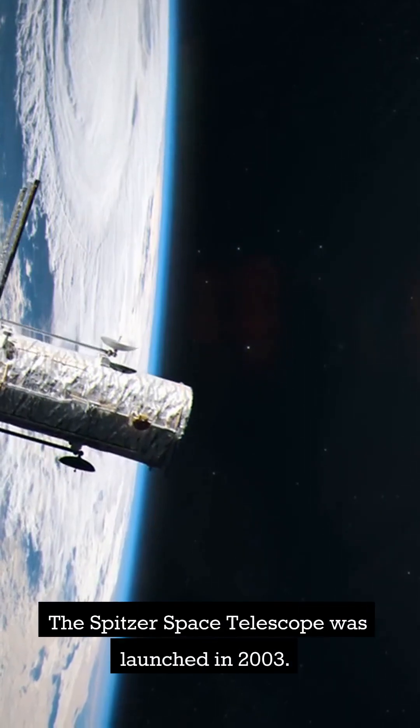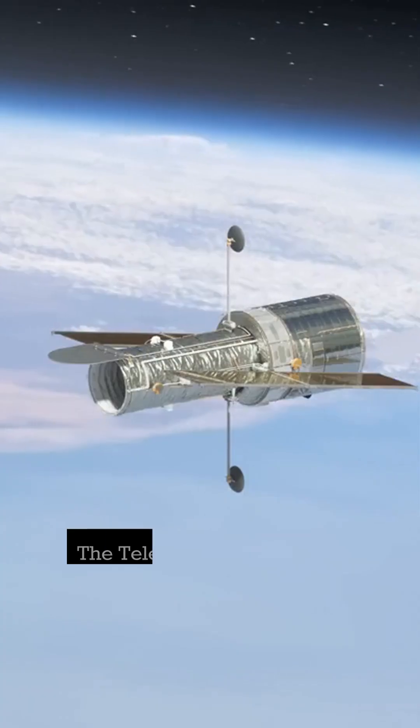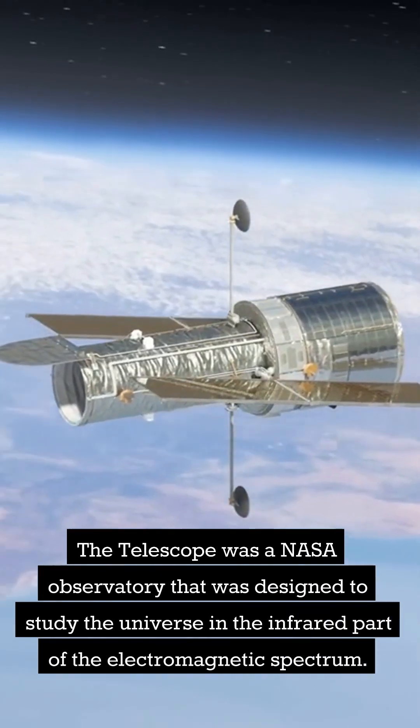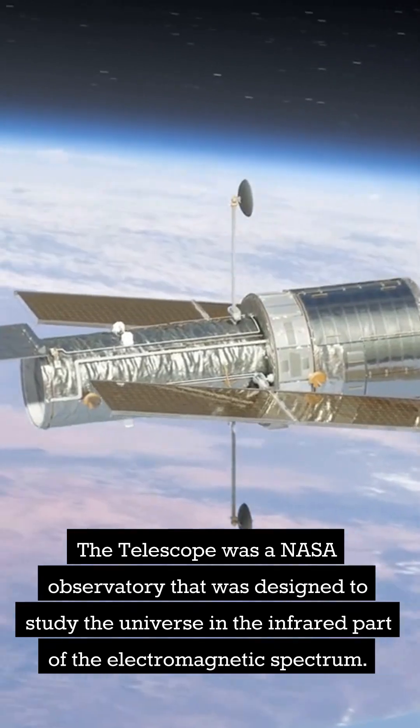The Spitzer Space Telescope was launched in 2003. The telescope was a NASA observatory that was designed to study the universe in the infrared part of the electromagnetic spectrum.